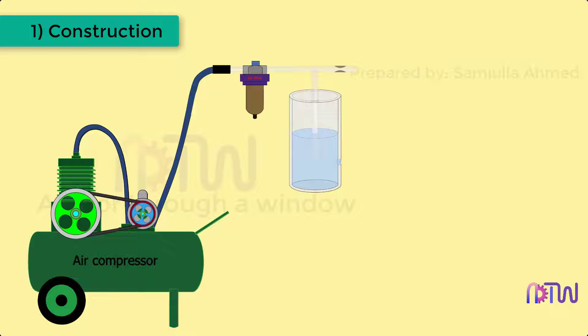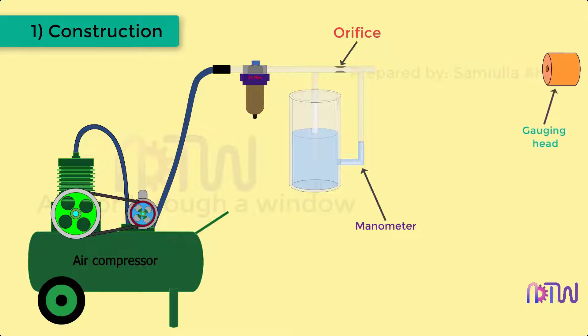Tank. After the air passes through the filter, the air pipe divides into two paths. Some air goes into the tank and some air goes to the gauging head through the orifice. Orifice. This orifice leads air to the second chamber. Manometer. Second chamber is an outlet to a glass manometer tube.